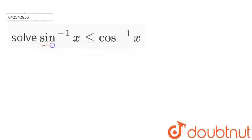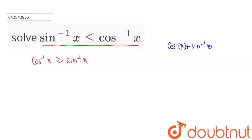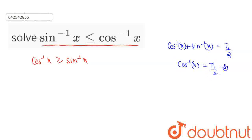Here we have to solve this expression and find the value for x. We have been given that cos inverse of x is greater than or equal to sin inverse of x. According to the identity, cos inverse of x plus sin inverse of x equals π/2, so cos inverse of x equals π/2 minus sin inverse of x.